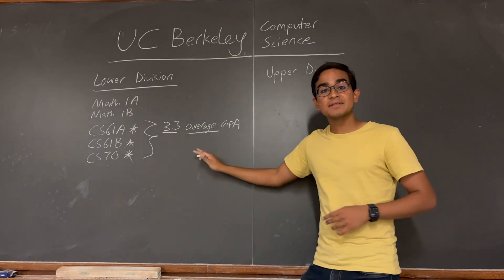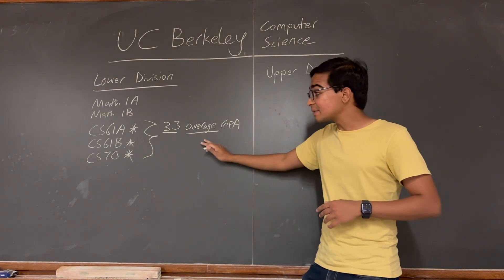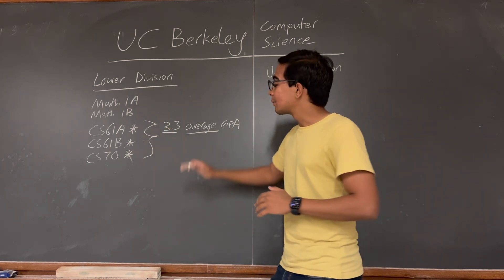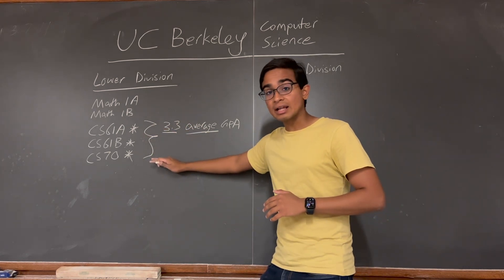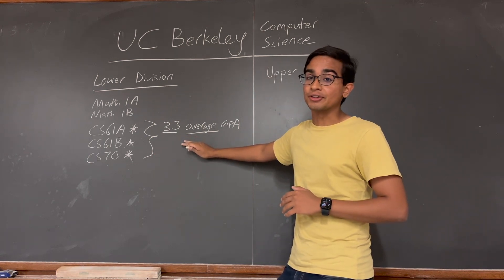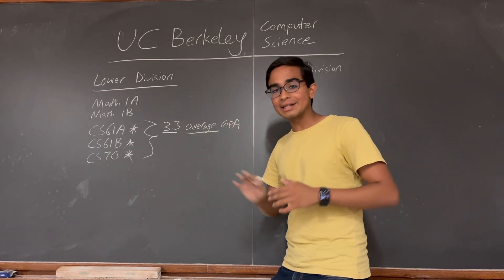I want to emphasize that this is an average. This means that you may get below a 3.3 GPA in any one of these classes, but your average across these three classes must be at least a 3.3. Let's take a quick look at how grading works at Berkeley.